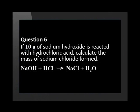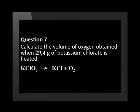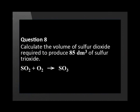Calculate the volume of oxygen obtained when 29.4 grams of potassium chlorate is heated. Calculate the volume of sulfur dioxide required to produce 85 decimeters cubed of sulfur trioxide.